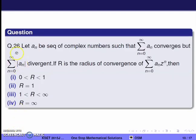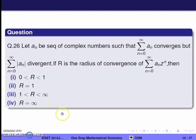Next question, question 26. Let {a_n} be a sequence of complex numbers such that Σ(n=0 to ∞) a_n converges, but Σ(n=0 to ∞) |a_n| diverges. If r is the radius of convergence of Σ(n=0 to ∞) a_n·z^n, we need to determine r. The series Σ a_n converges but Σ |a_n| diverges.